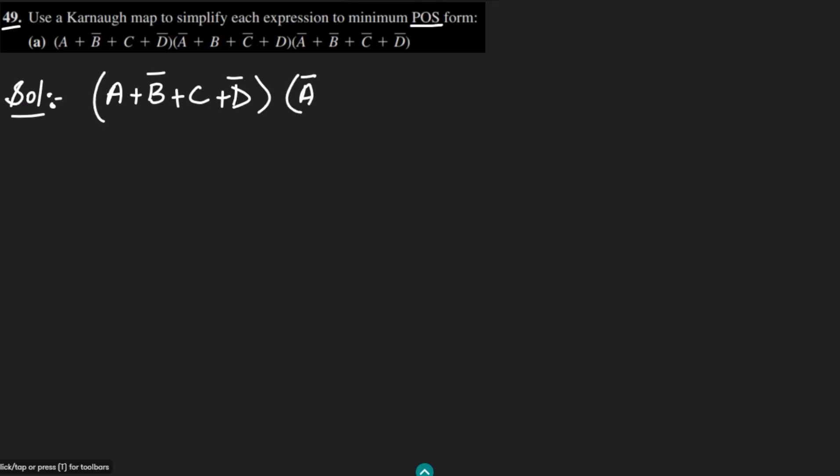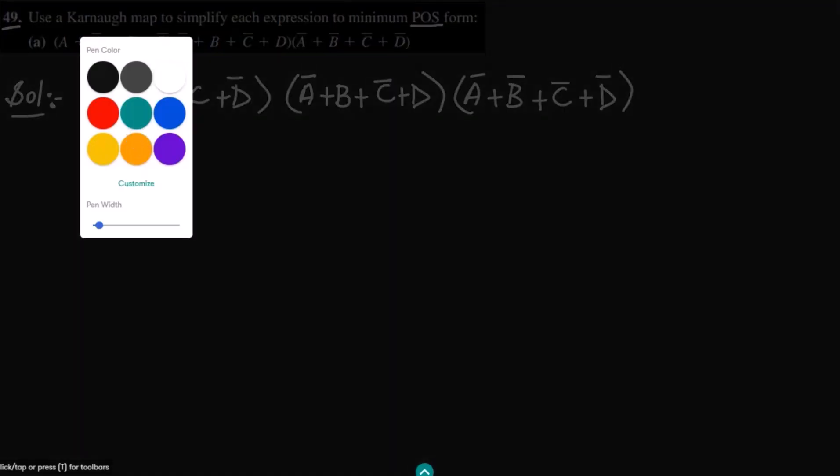Similarly, here we have A complement plus B plus C complement plus D, and the last term here is A complement plus B complement plus C complement plus D complement. The domain variables are already given which are A, B, C, D and after that I have to write the binary values.